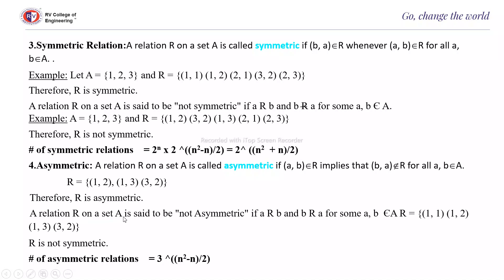A relation R on set A is not asymmetric if a is related to b and b is related to a, for some a,b ∈ A. Example: R = {(1,1),(1,2),(1,3),(3,2)} on A = {1,2,3}. Here (1,1) is there — its opposite (1,1) should not be there, but it is — so R is not asymmetric. Also, R is not symmetric because (1,2) is there but (2,1) is not.